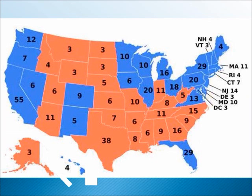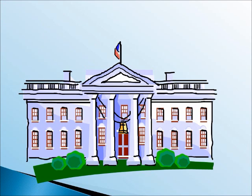Each state receives one electoral vote for each representative in Congress, meaning two votes for each state because each state has two senators, and one vote for every representative from each state. Therefore, small states such as North Dakota or Wyoming only have three votes, whereas big states like Texas get 38 votes or California 55 votes. In total, this makes for 538 electoral votes, meaning that a candidate needs to win 270 or more of these to become president of the United States of America.